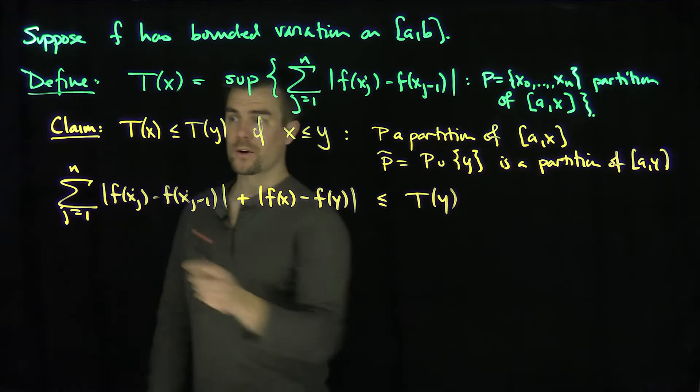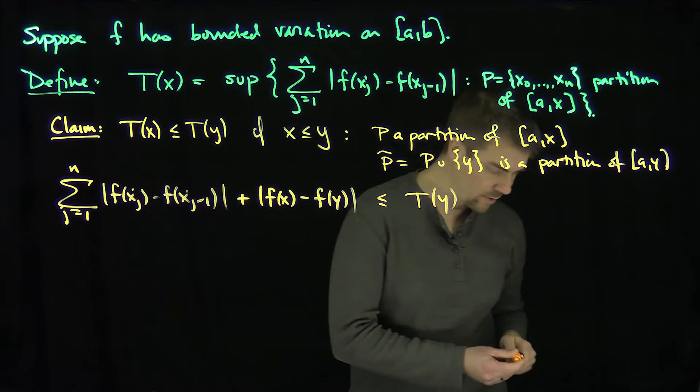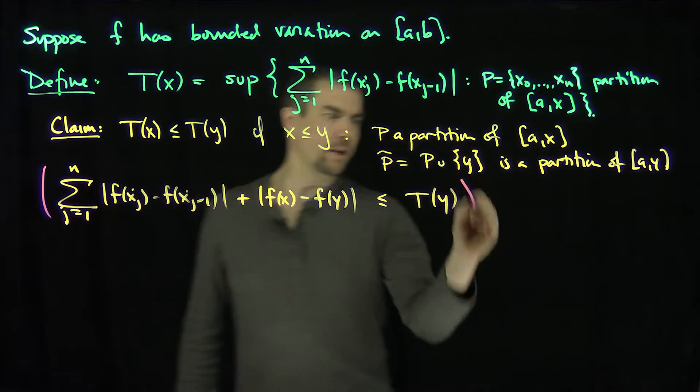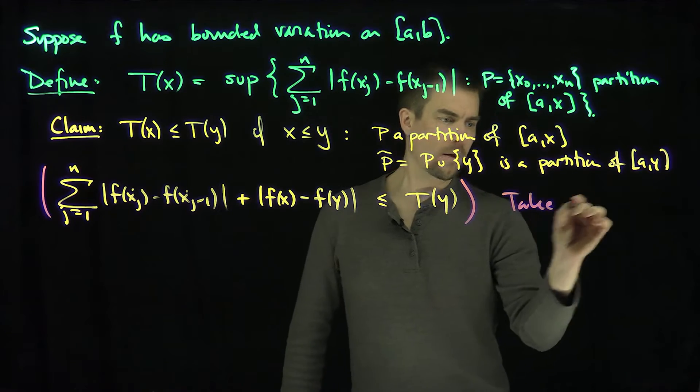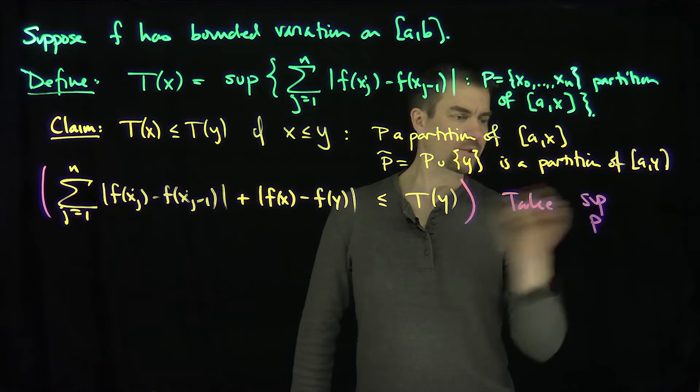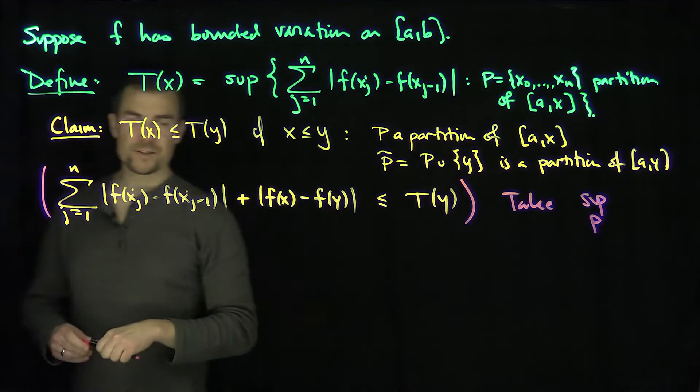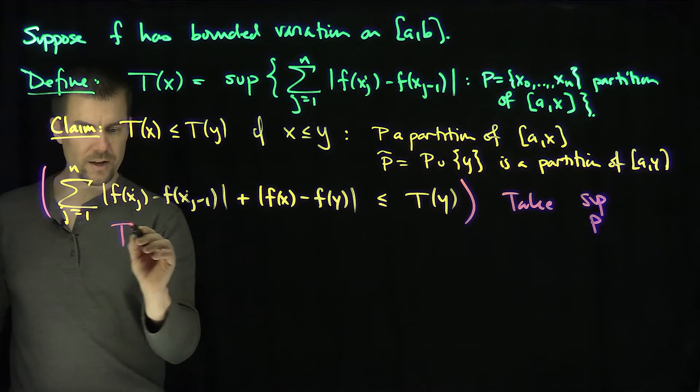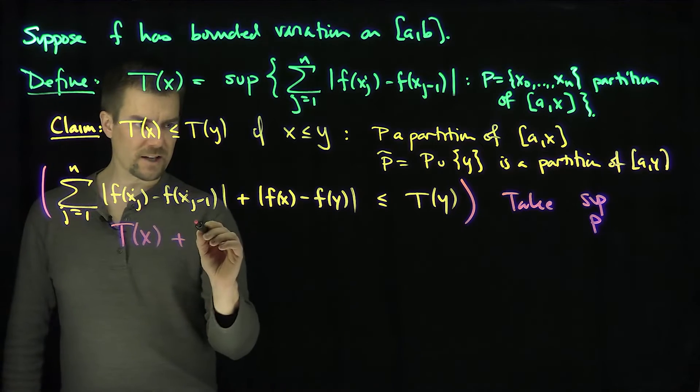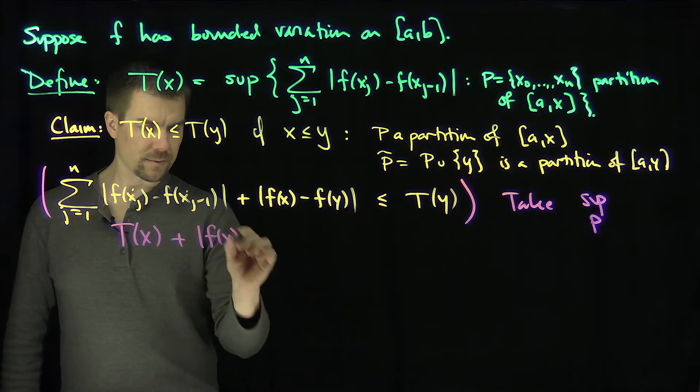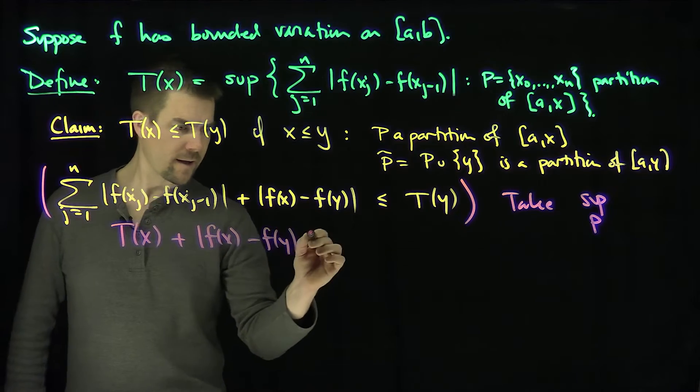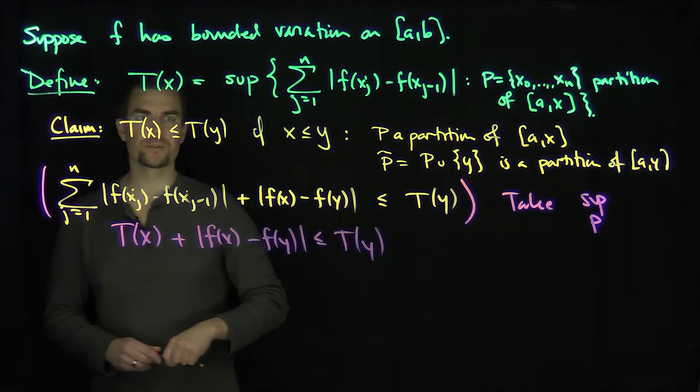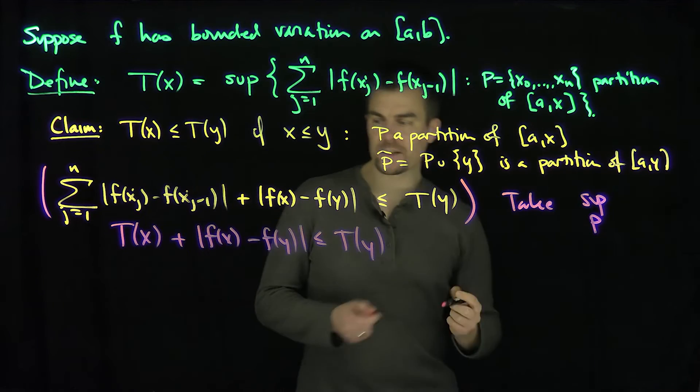Now if I take the supremum of this quantity over all P, take the supremum over all such P that are partitions of A to x, this expression turns into T of x. Then I have T of x plus F of x minus F of y is less than or equal to T of y.